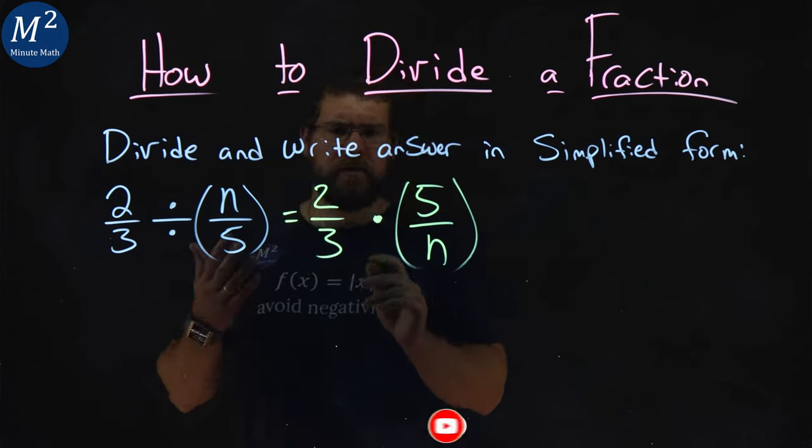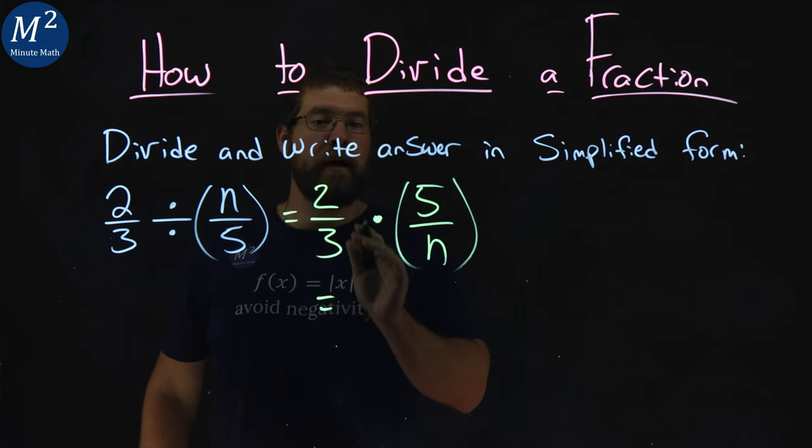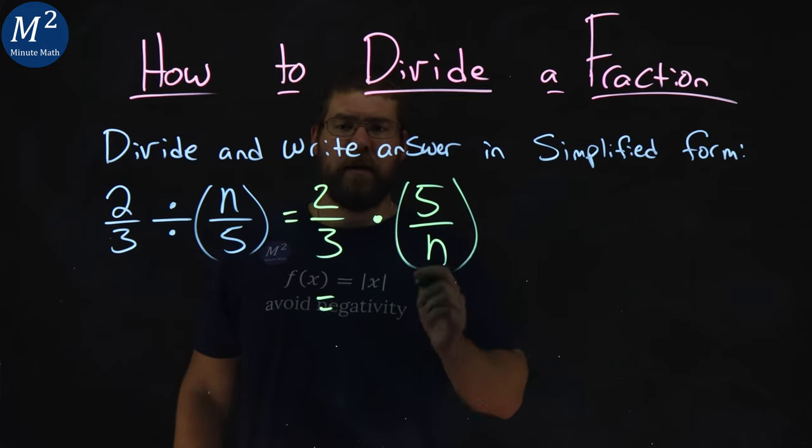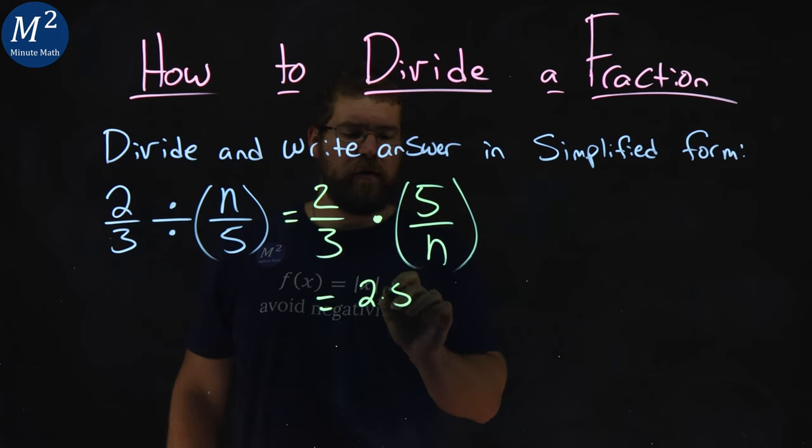From there, our rules of multiplication of fractions state we multiply across the numerator and the denominator. Two times five over three times n.